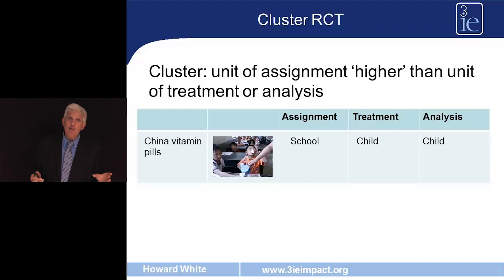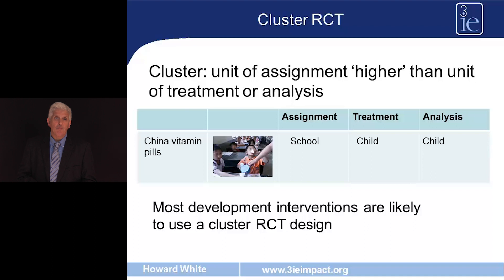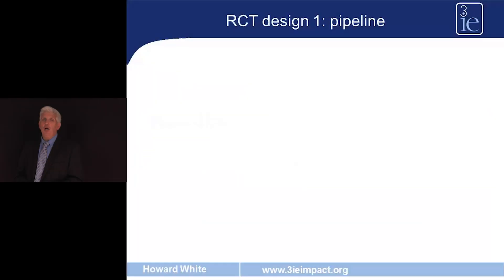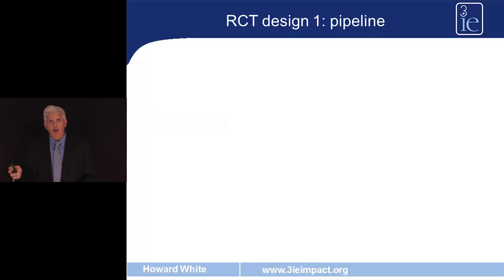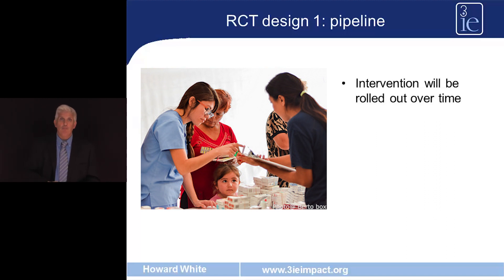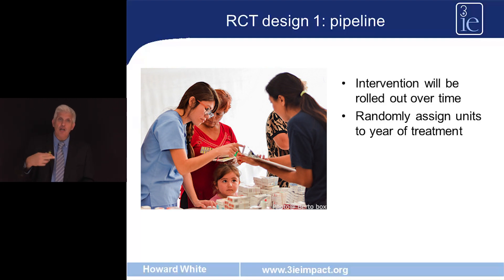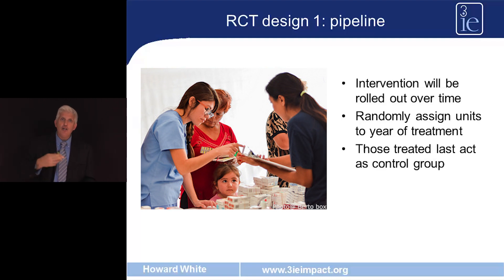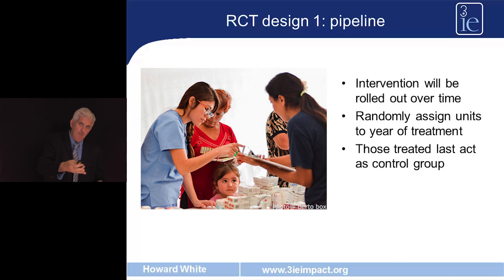Development interventions will most usually be amenable to cluster RCT designs. There are five possible RCT design types, and they are not mutually exclusive. The first is a pipeline design. In a pipeline design, you don't randomly allocate units to treatment or control — you randomly allocate the order in which they receive the intervention. This can be used when the intervention is anyway going to be rolled out over time, and those who get treated later act as the control group for those treated earlier.